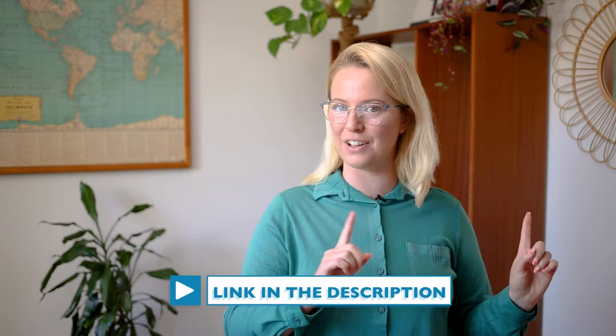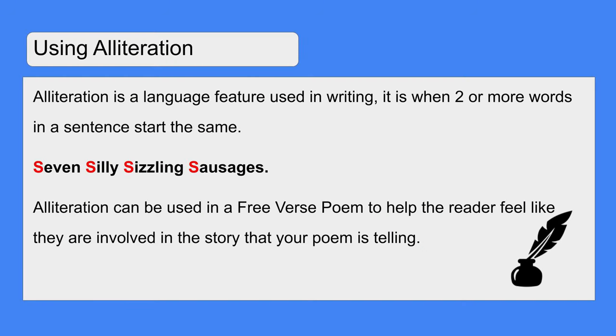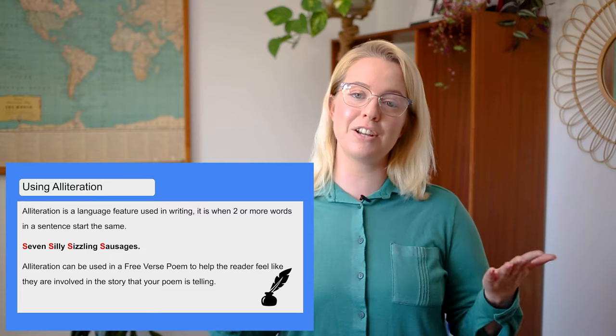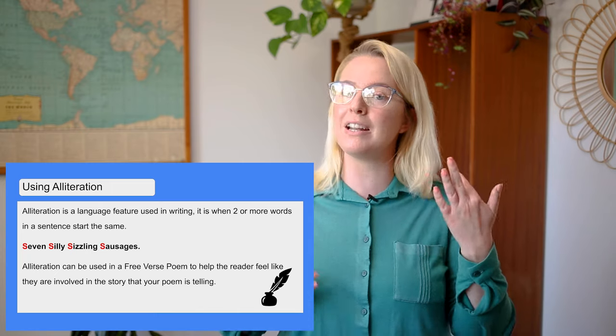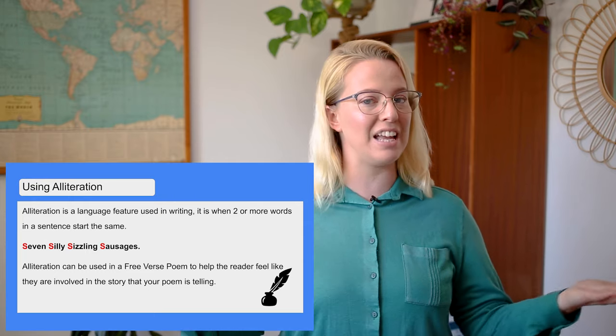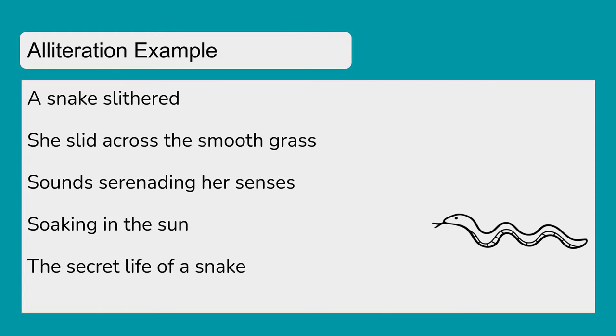Something else that we can do when we are writing free verse poetry is using alliteration. I've already done an alliteration lesson video that you can have a look at as well. So how could we use it in our free verse poetry? Alliteration is a language feature used in writing — it is when two or more words in a sentence start the same, like seven silly sizzling sausages. Alliteration can be used in a free verse poem to help the reader feel like they are involved in the story you are telling. Here is an example: A snake slithered. She slid across the smooth grass. Sounds serenading her senses. Soaking in the sun. The secret life of a snake. Lots of S's in that one!